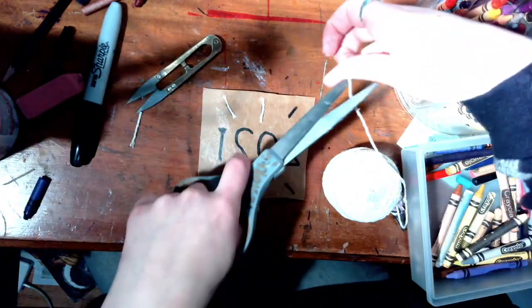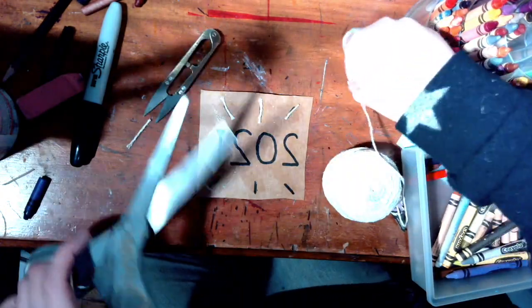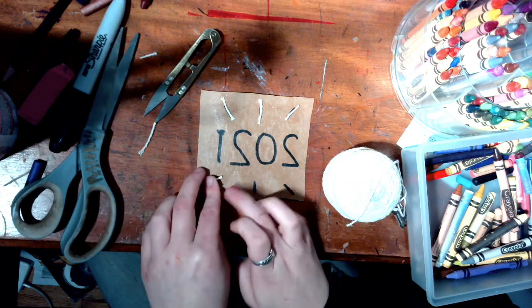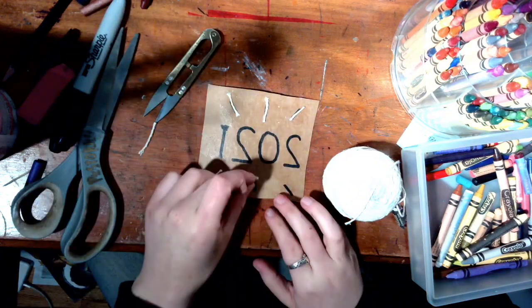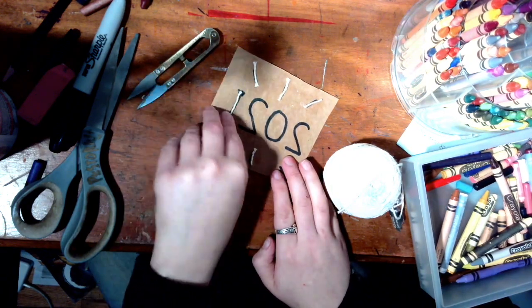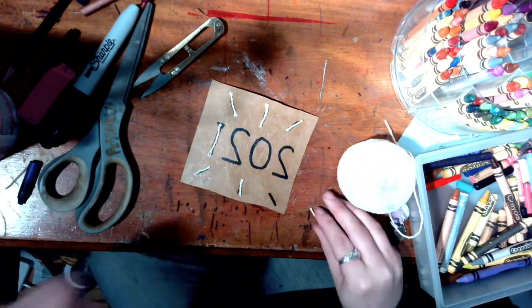So now what I'm doing next is pretty self-explanatory. I'm taking all of these different little marks that I made, and you can make as many marks as you want on this piece of cardboard. You can make more little exclamation signs that are pointing out or really whatever you want to do.